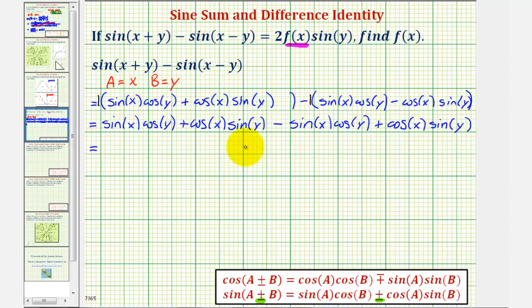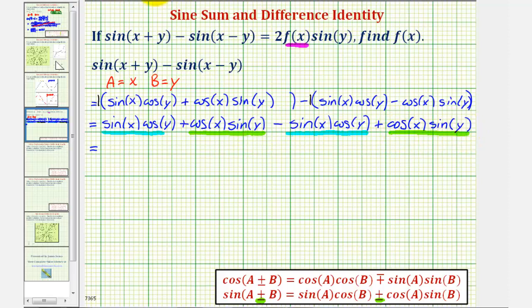Now let's carefully identify the like terms. We have sine x cosine y and minus sine x cosine y — these are like terms and cancel to zero. We also have cosine x times sine y plus cosine x times sine y, which gives us two cosine x sine y.